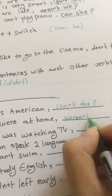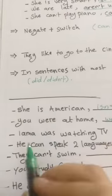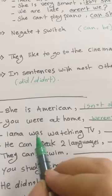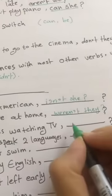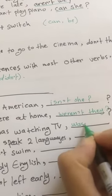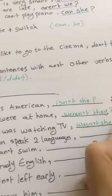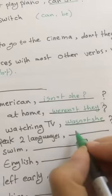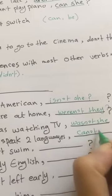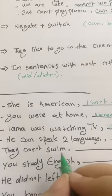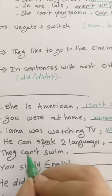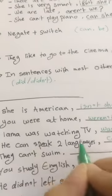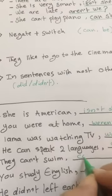Lama was watching TV - of course I won't say wasn't Lama, I'll say wasn't she. He can speak two languages, can't he? They can't swim - it's negative, so we'll make it affirmative. So can they?